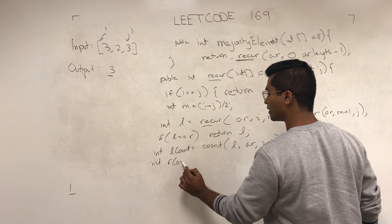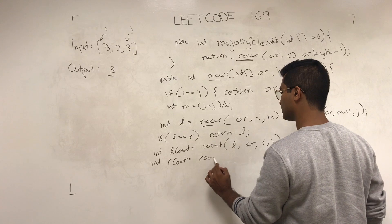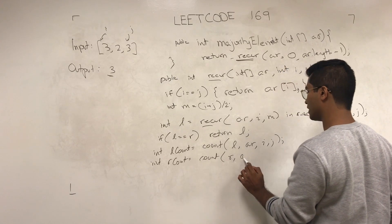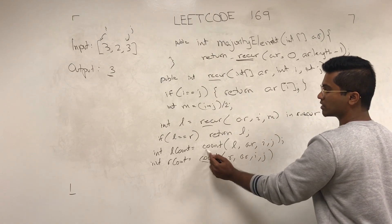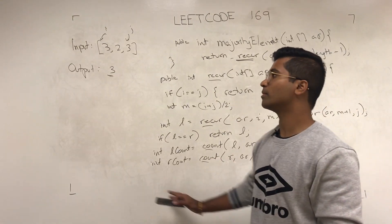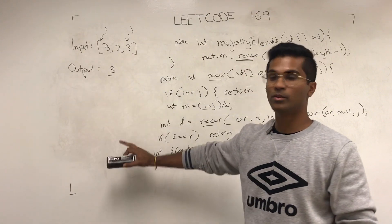And then int rcount is going to be count r, AR, i to j. And I'm going to tell you what this count method looks like in a second, but it's a simple one. You know what, let's just write it here.